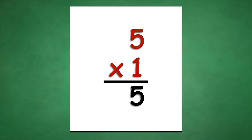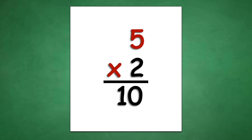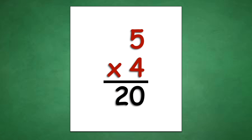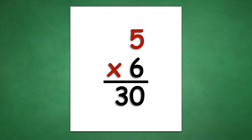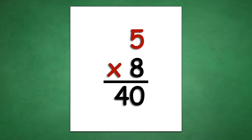Table of 5: 5 times 1 equals 5, 5 times 2 equals 10, 5 times 3 equals 15, 5 times 4 equals 20, 5 times 5 equals 25, 5 times 6 equals 30, 5 times 7 equals 35, 5 times 8 equals 40, 5 times 9 equals 45, 5 times 10 equals 50.